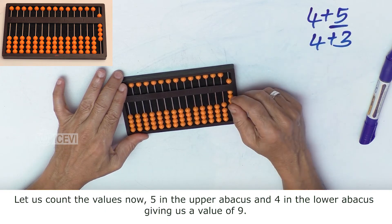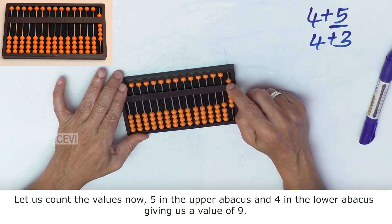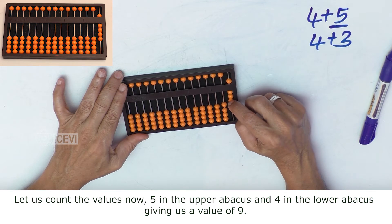Let us count the values now: 5 in the upper abacus and 4 beads in the lower abacus. That is 5, 6, 7, 8, 9.